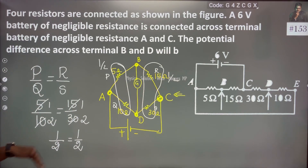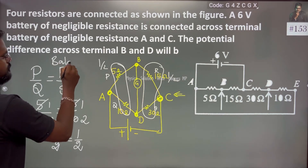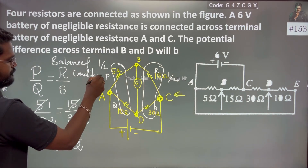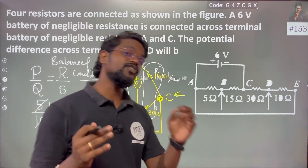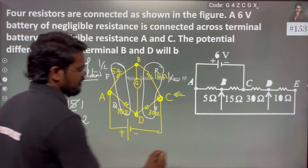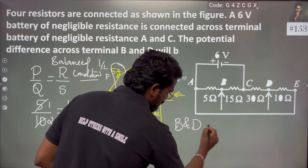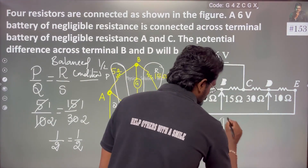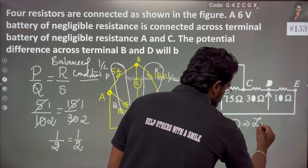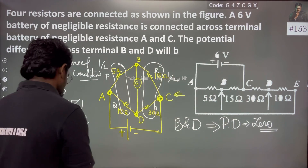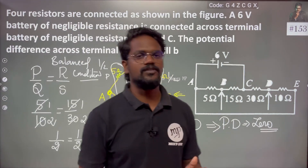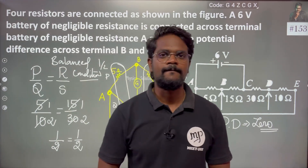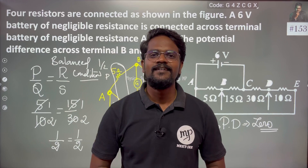Since P by Q is equal to R by S, this is the balanced condition. In the balanced condition, there is no potential difference across B and D. Simple understanding of the Wheatstone Bridge concept gives a very clear idea. Thank you.